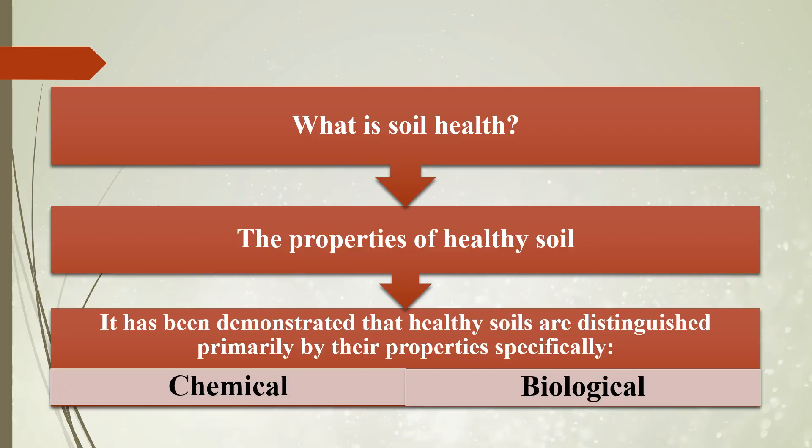Soil health refers to the soil's ability to operate as a vital living ecosystem, support plant and animal health, improve water and air quality, and promote soil biodiversity. It can also be defined as the optimal state of the biological, physical, and chemical function of the soil. Healthy soils are characterized by their chemical and biological properties — they suppress infections, sustain biological activity, inactivate harmful compounds, degrade organic materials, and recycle nutrients, water, and energy.